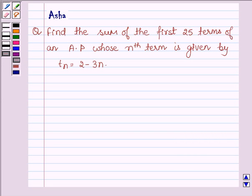Hello and welcome to the session. The given question says, find the sum of the first 25 terms of an AP whose nth term is given by tn = 2 - 3n.